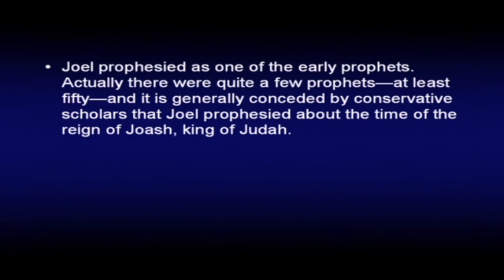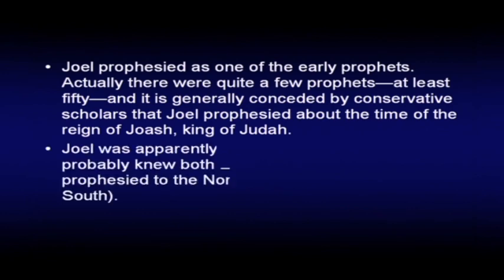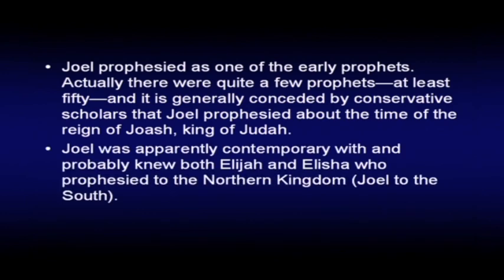There were actually quite a few prophets — over 50 of them. It's generally conceded by conservative scholars that Joel prophesied about the time of Joash, king of Judah. Joel was apparently contemporary with, and probably knew, both Elijah and Elisha, who of course were dealing with the northern kingdom, the kingdom of Israel. Joel, of course, is focusing on the south, but his venue would overlap those two. He saw some interesting history.